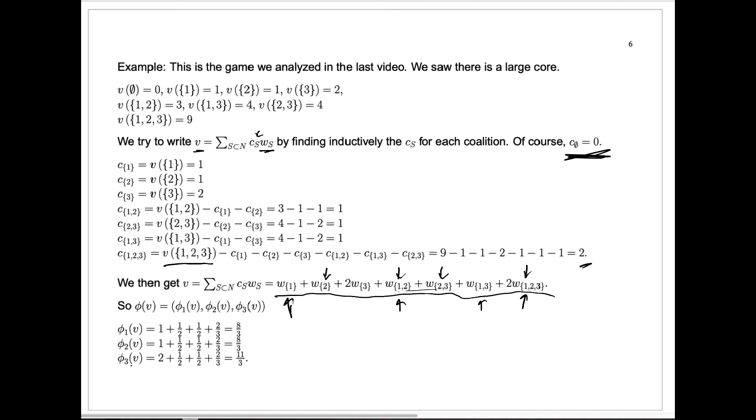What about φ sub 3? φ sub 3 when I apply it to v, which is this whole thing, gives us 0 except for these terms, the sets where the sets contain 3. And what do we get? Here we have a 2 times w sub 3, so that gives us a 2 here instead of the ones that we had before. But then we also add 1 half for this one, 1 half for this one, and 2 thirds for that one. So we get 2 plus 1 half plus 1 half plus 2 thirds, which is 11 thirds.